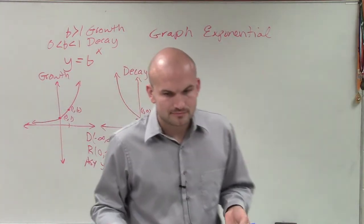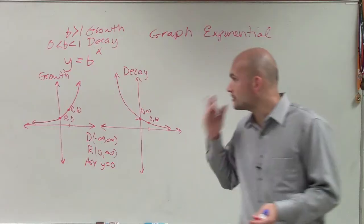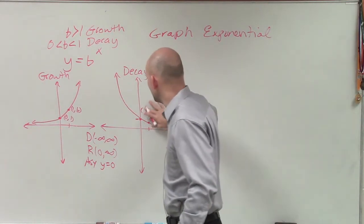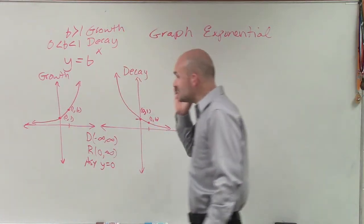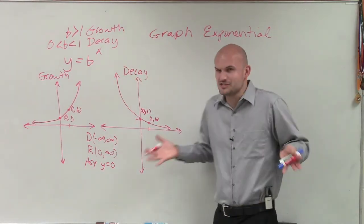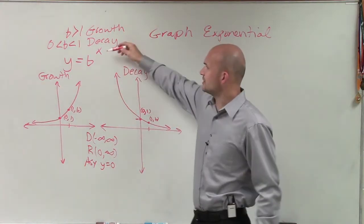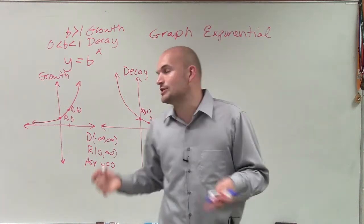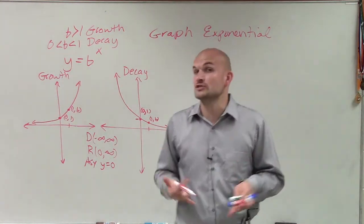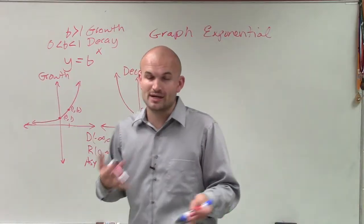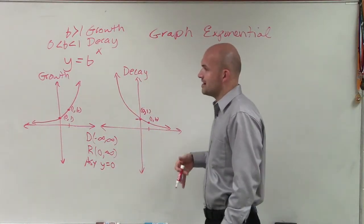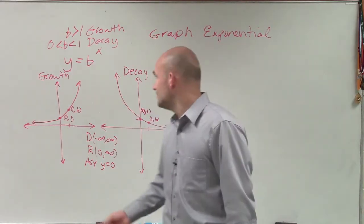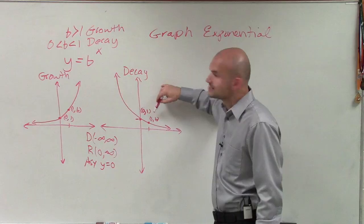When graphing, if you have a graph in one of these general forms, the best method I like to use is just a table of values. Pick values for x, then find y. I usually just require at least two points so you can find the shape of the graph, and the best two points I choose are at x = 0 and x = 1, as you can determine those fairly easily.